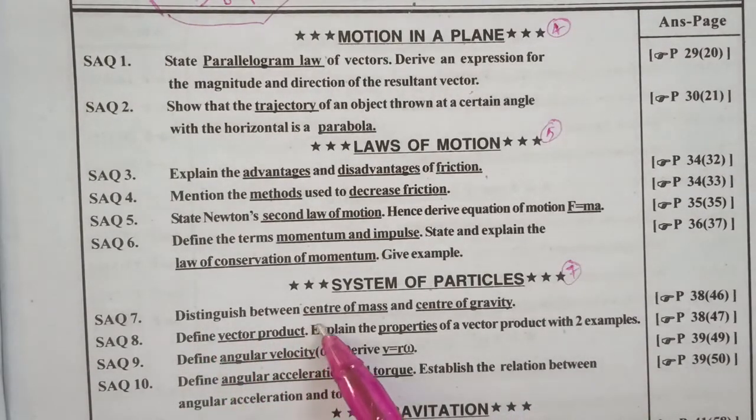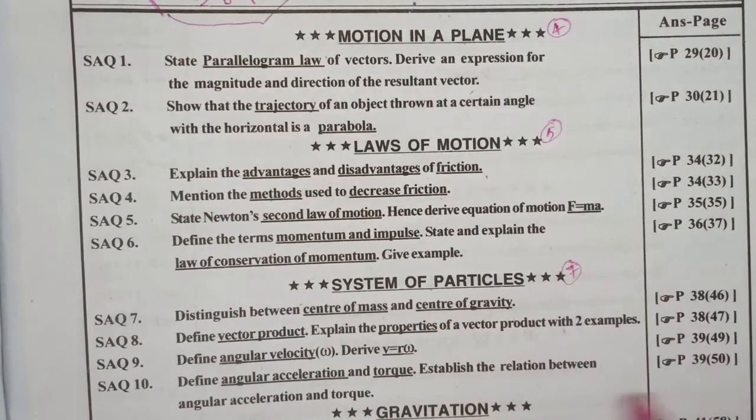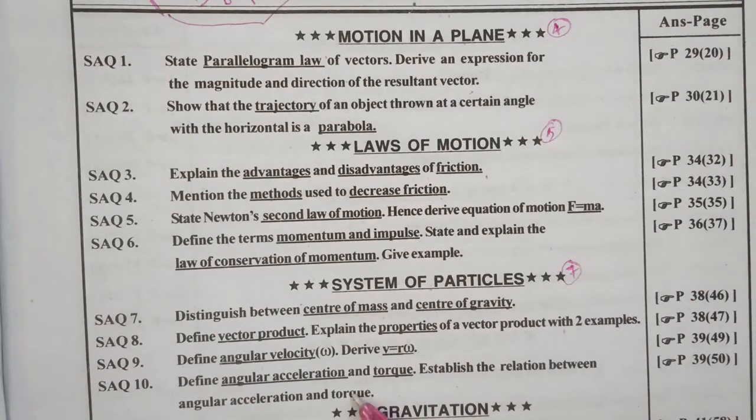Distinguish between center of mass and center of gravity. Next, define vector product, explain the properties of a vector product with two examples. Define angular velocity and derive V equals R omega. Define angular acceleration and torque. Establish the relation between angular acceleration and torque.